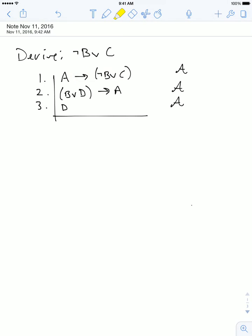So we can anticipate that our derivation is going to end with a sentence not B or C and, more importantly, that we're going to derive this by using line one and some other line to eliminate the condition.